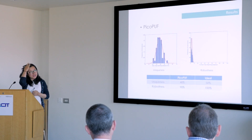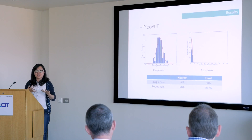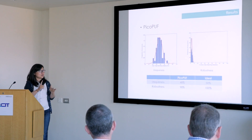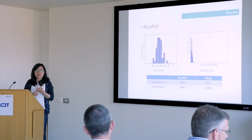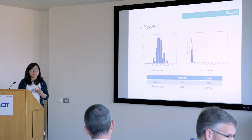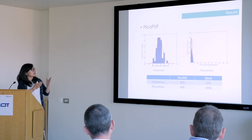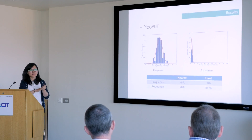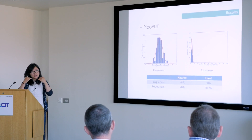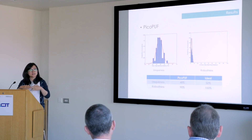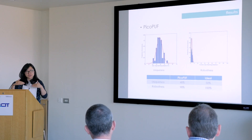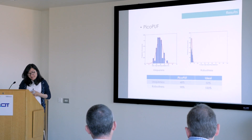So far, we have three different types of PUF results: one is PICO PUF, one is RO PUF, and one is the TBR PUF. Today I will show you the PICO PUF results to demonstrate how we evaluate them and what the results look like.